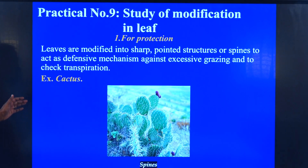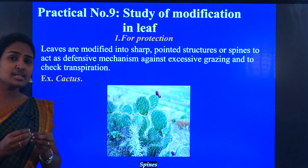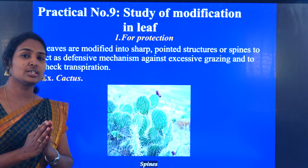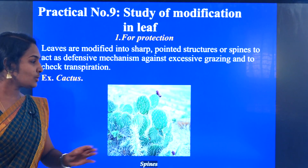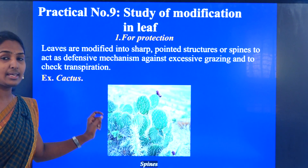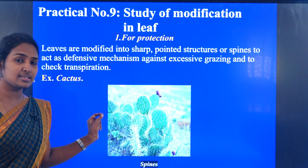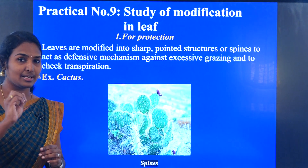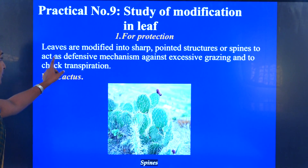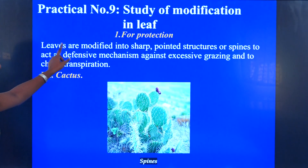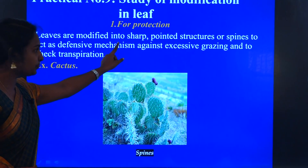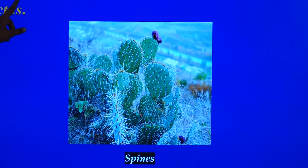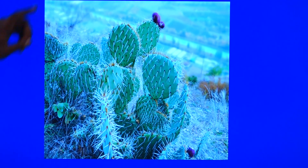The first modification is for protection. If you are seeing some plants, there will be a modification in the leaf. The best example is the cactus. If you see the cactus, there will be spines on the plant. Leaves are modified into sharp pointed structures or spines to act as a defensive mechanism against excessive grazing.